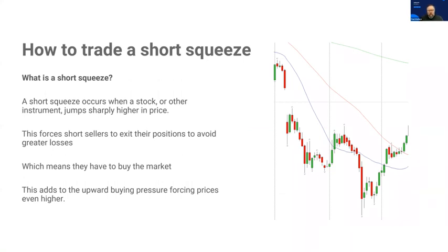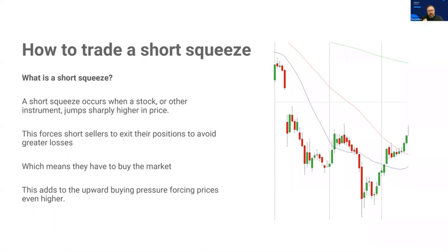So what is a short squeeze? A short squeeze occurs when a stock or any other instrument jumps sharply higher in price. This forces short sellers to exit their positions to avoid greater losses, which means they have to buy the market. That adds to the upward buying pressure, forcing prices even higher. A short squeeze occurs when the instrument you're trading jumps sharply higher after a downtrend.